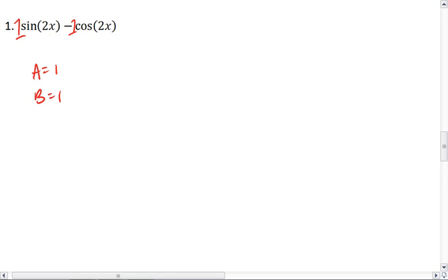What we're going to get here then is that square root of a squared plus b squared is going to equal the square root of 1 plus 1, which is the square root of 2.